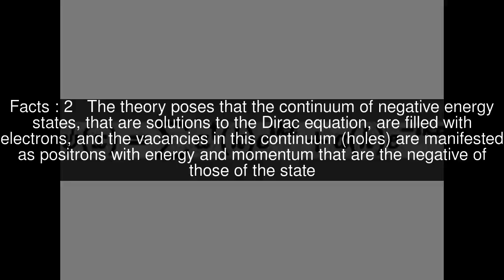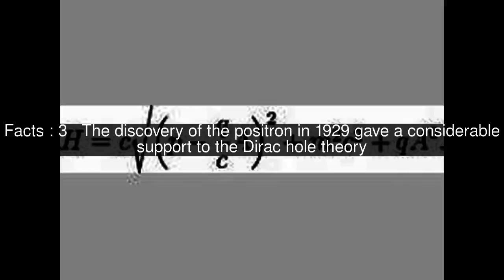The vacancies in this continuum — holes — are manifested as positrons with energy and momentum that are the negative of those of the state. The discovery of the positron in 1929 gave considerable support to the Dirac hole theory.